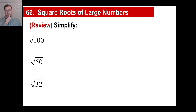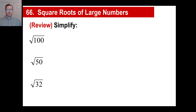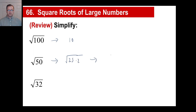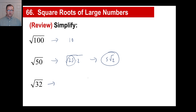The second part of this is square roots of large numbers. If you want to write a little list for yourself: the square root of 100 is 10. Square root of 50 — I'm going to have to bust this up into pieces. 25 times 2, so that's 5 times the square root of 2. And 32: you might recognize this as 2 times 16. The square root of 16 is 4, so the answer is 4 square root of 2.